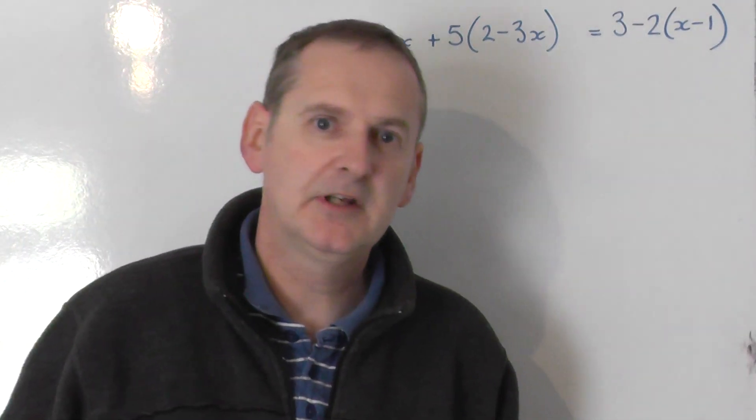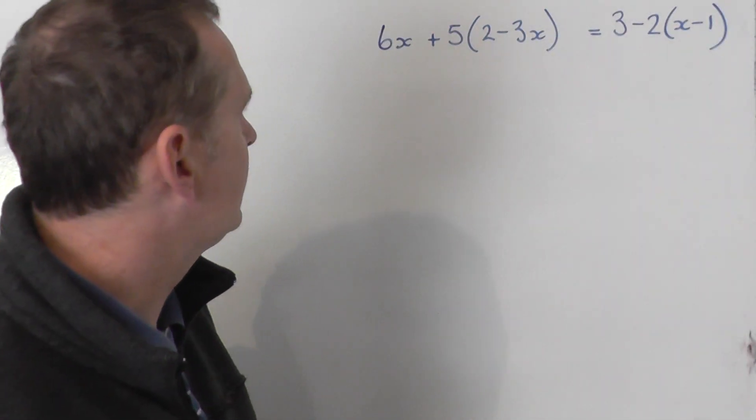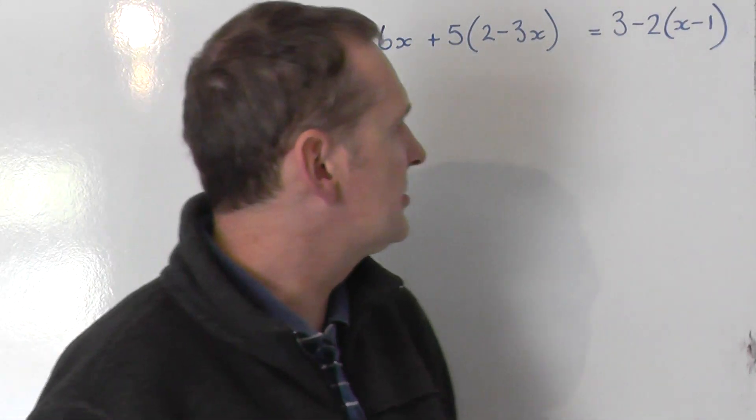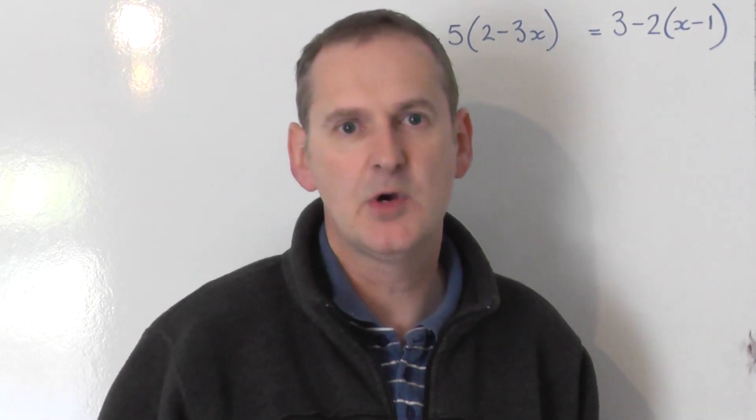Here we've got a quite nasty looking equation. We've got 6x plus 5 lots of 2 minus 3x is equal to 3 minus 2 lots of x minus 1. Let's see if we can solve this equation.